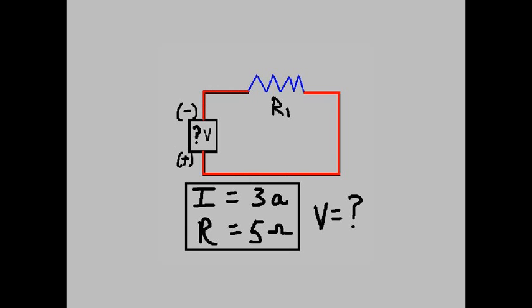New problem. Current equals 3 amps. R equals 5 ohms.